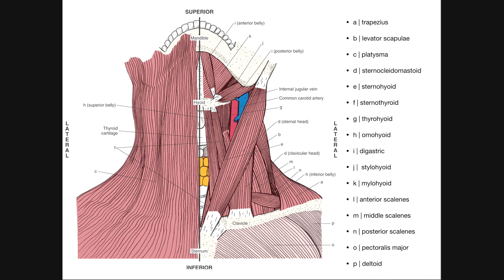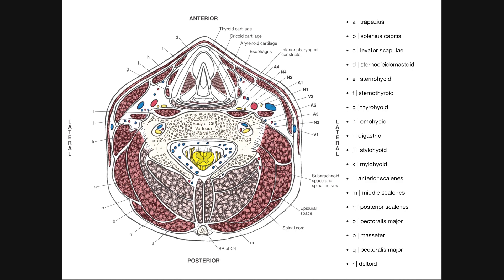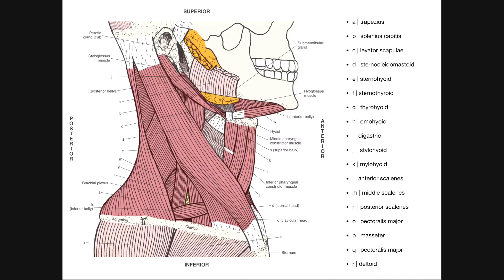In those videos we actually looked at anterior views. Now we're going to look at a lateral view of the anterior neck muscles and then also a cross section at the level of the C5 vertebra. We're looking at the right lateral side of the body.